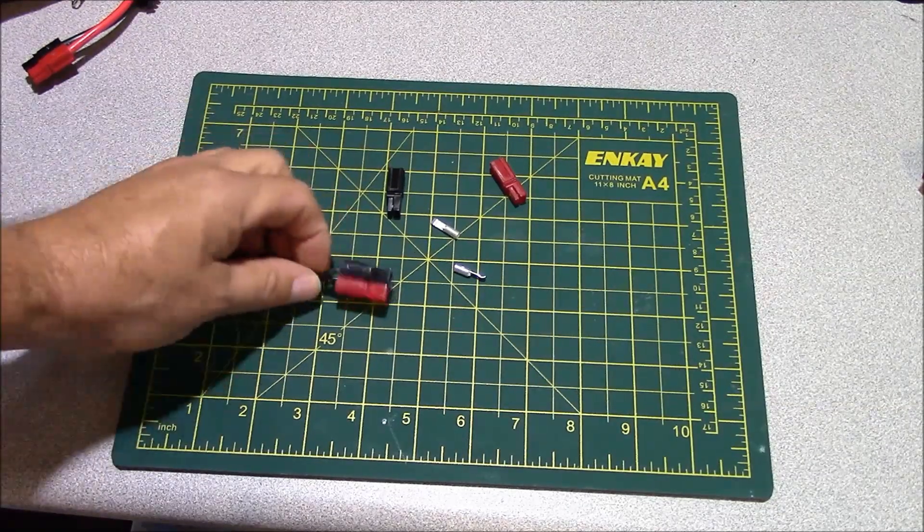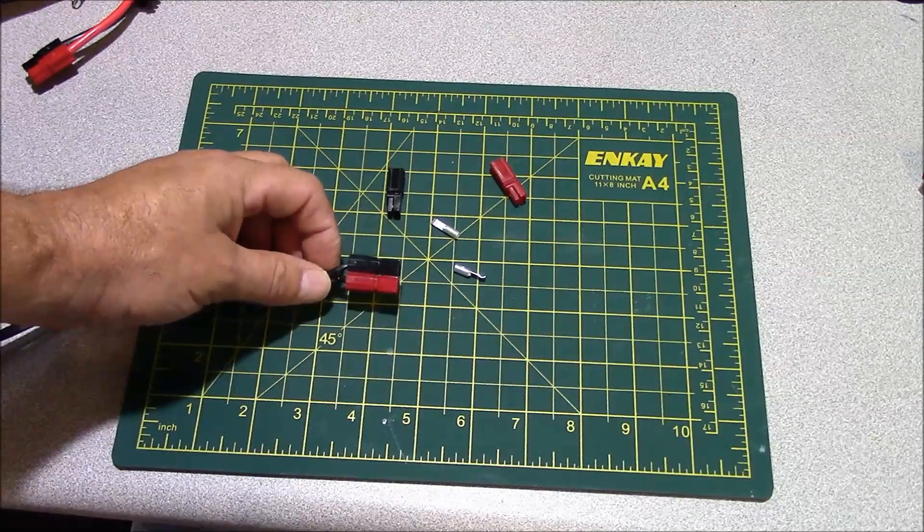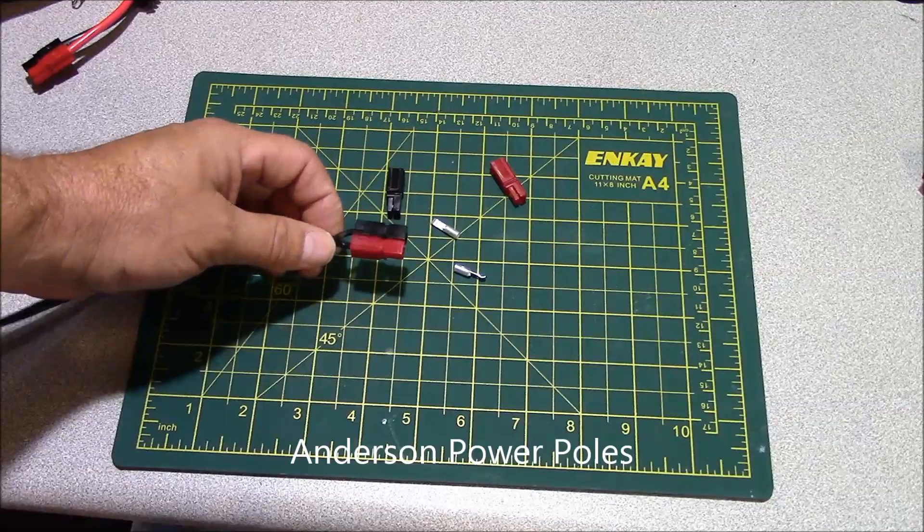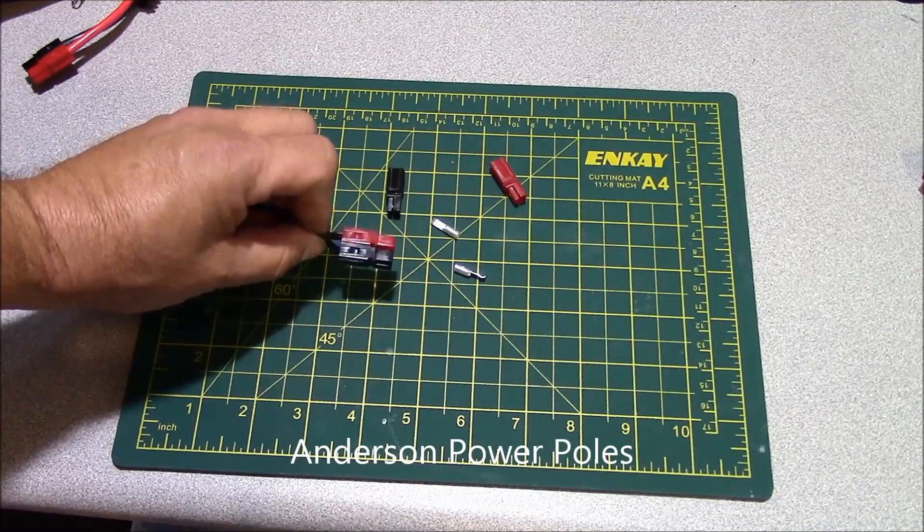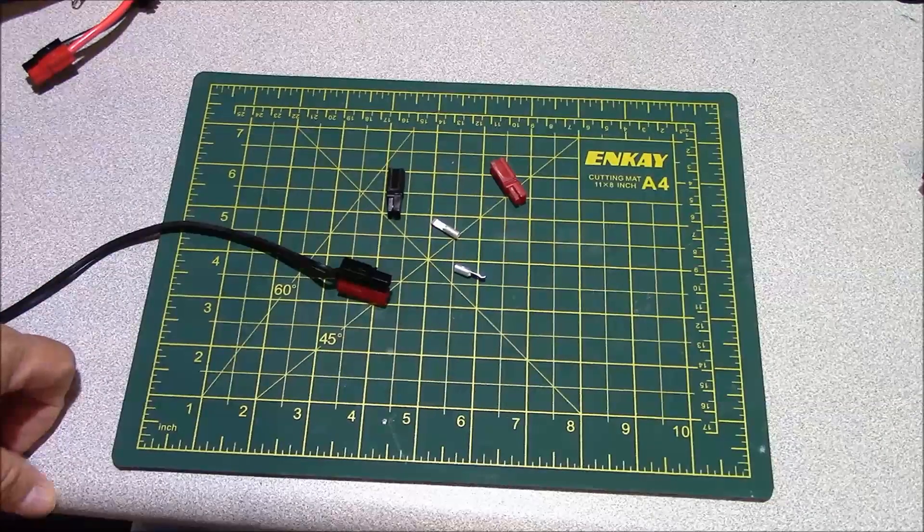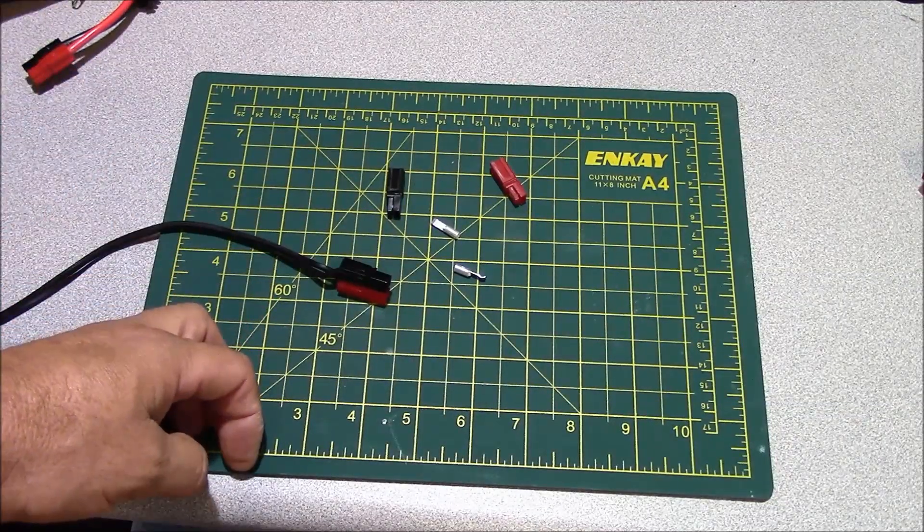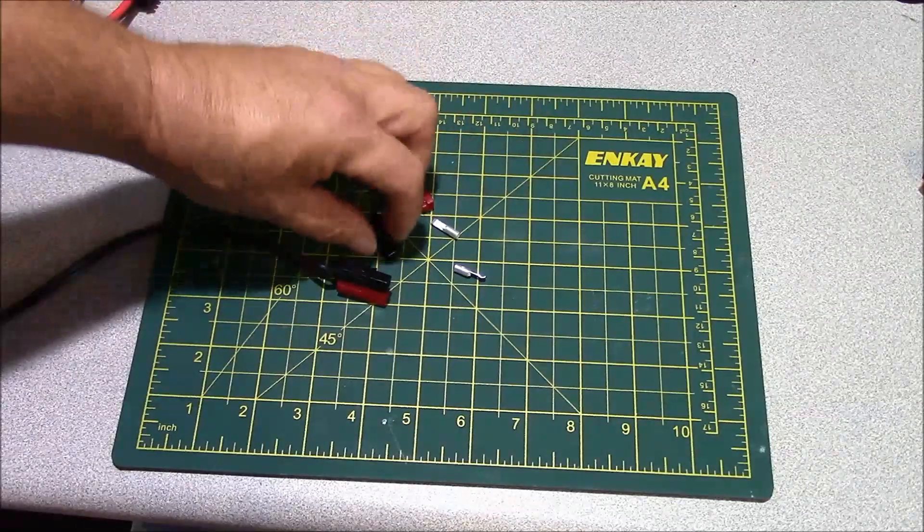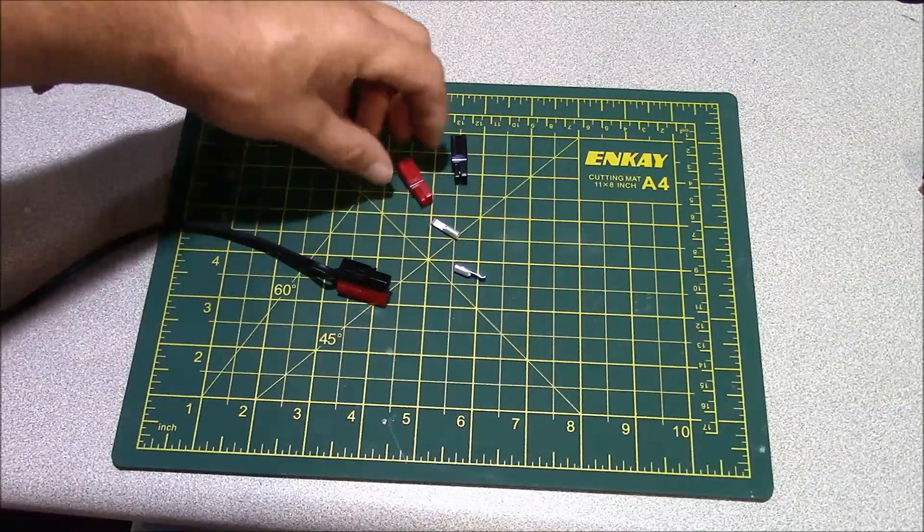These connectors that I've standardized with are the Anderson connectors which are also known as PowerWorks connectors, Glarks connectors, and in the RC car days they were called Lightspeed connectors. These are relatively inexpensive connectors. They can handle up to 30 amps of current and you can assemble these things and customize them to your heart's desire.